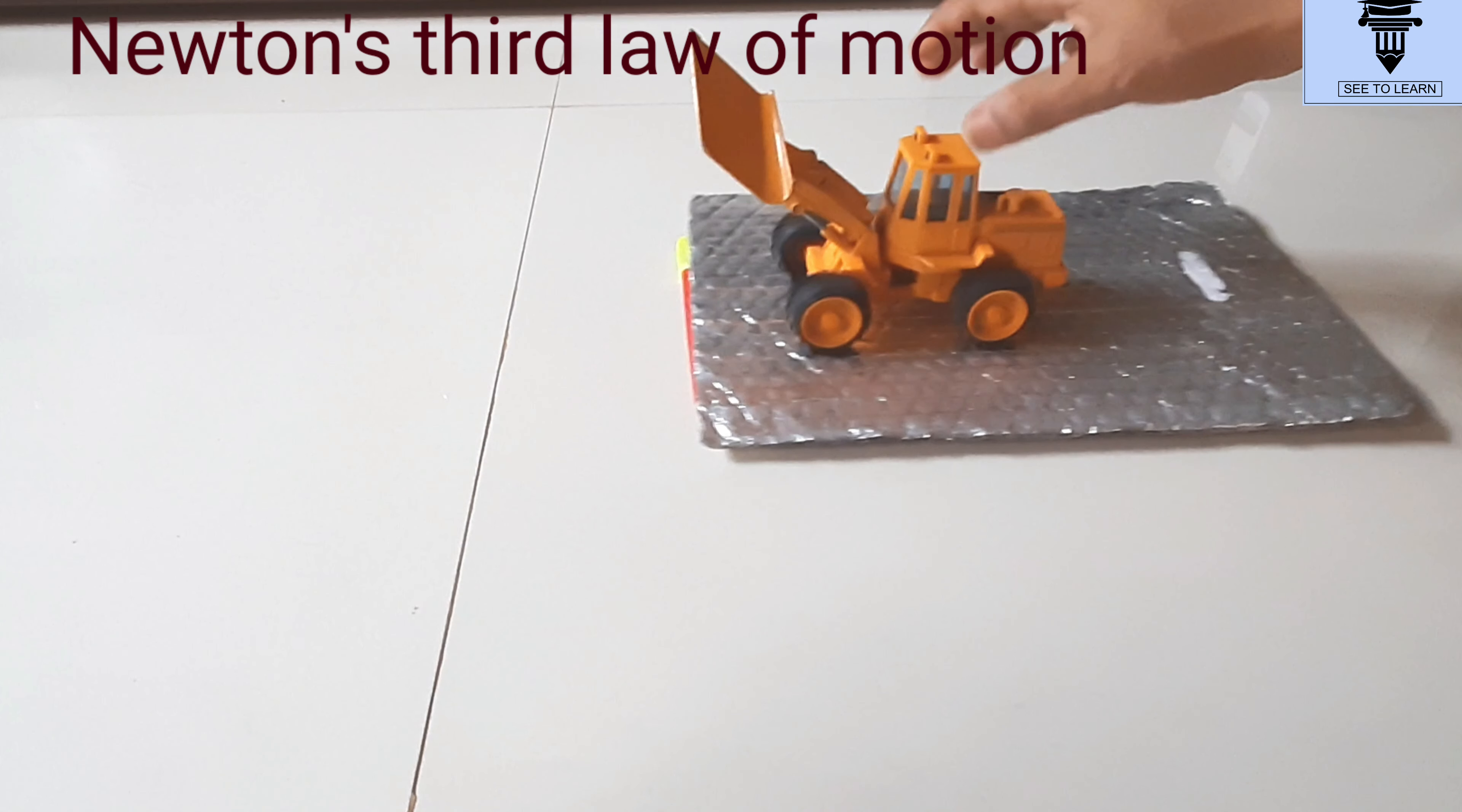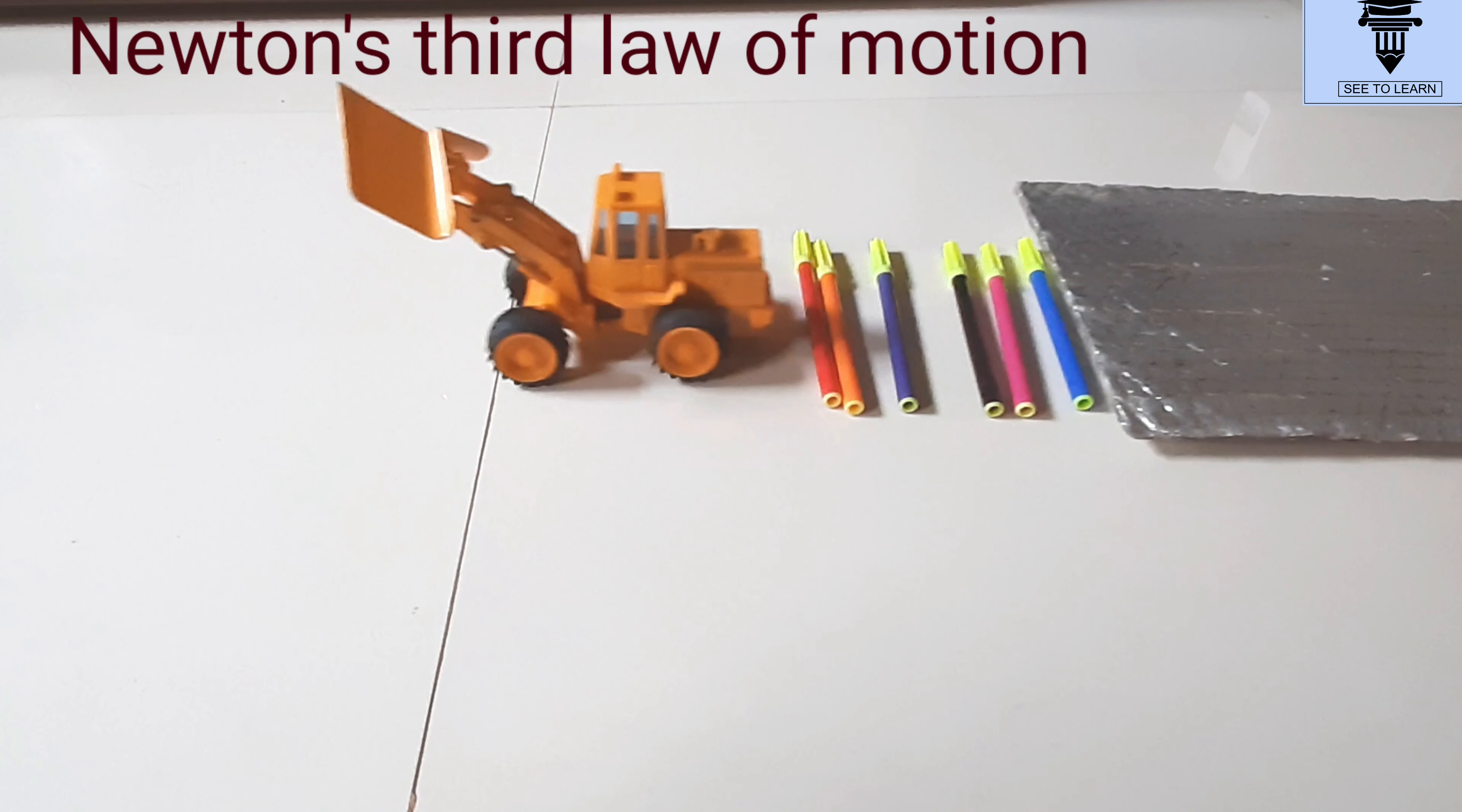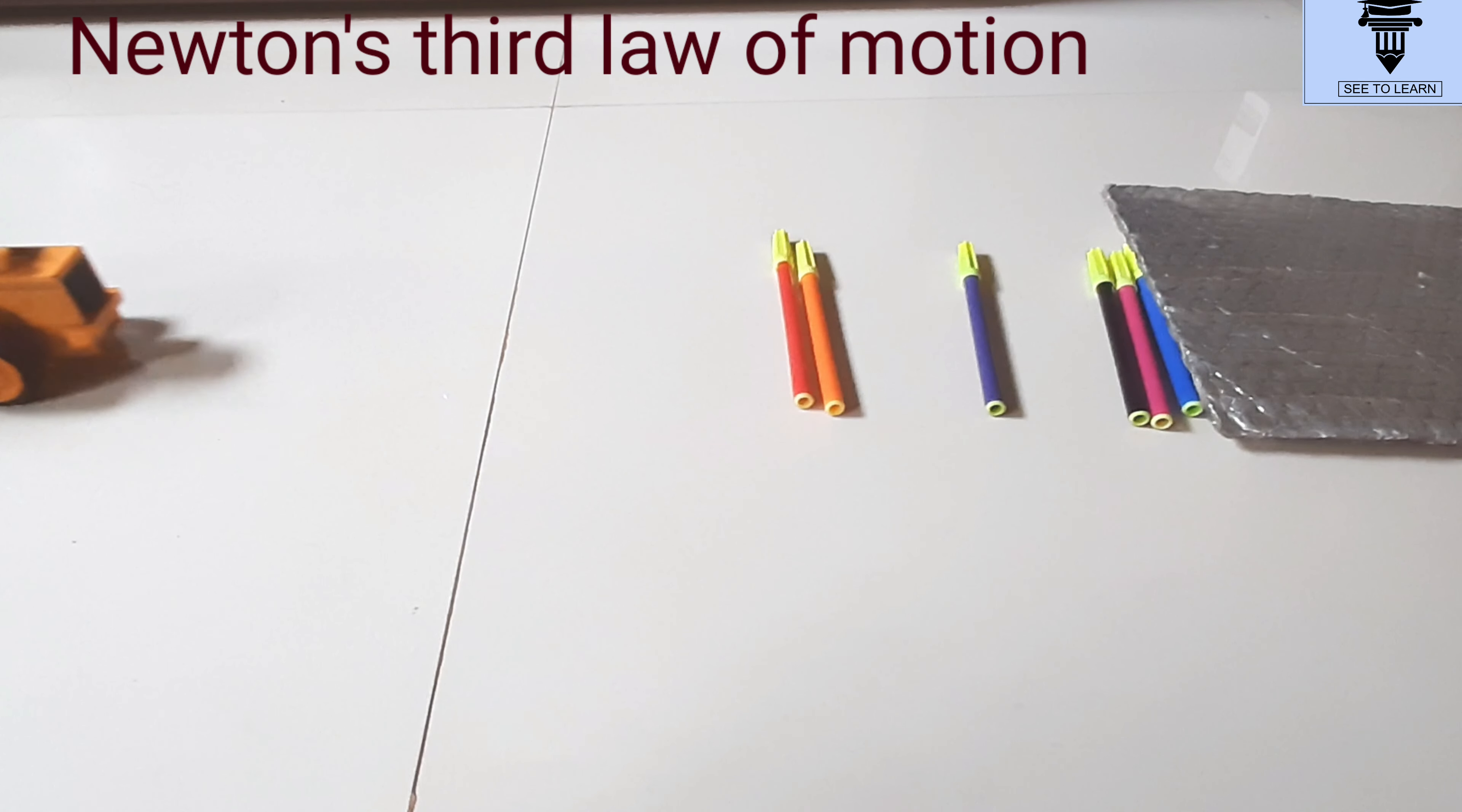See what happens when the toy car moves forward on the sheet. The sheet has moved in the backward direction. So the backward force must have been exerted by the car, right?